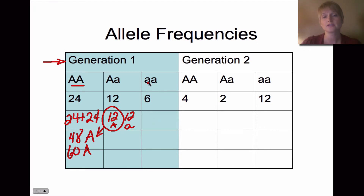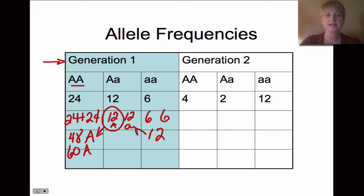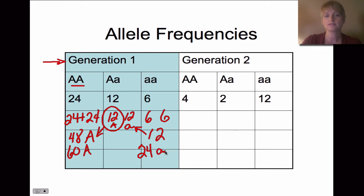Now for the lowercase a alleles: the homozygous recessive individuals — 6 total — each carry two recessive alleles, giving us 12 lowercase a from that group. Adding the 12 lowercase a from the heterozygotes gives us 24 lowercase a alleles total.